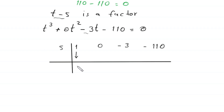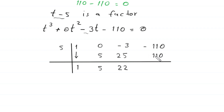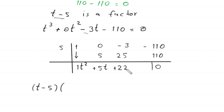The 1 comes down as is. Multiply 1 by 5 to get 5; 5 + 0 = 5. Multiply 5 by 5 to get 25; −3 + 25 = 22. Multiply 22 by 5 to get 110; −110 + 110 = 0. So the factored form is (t − 5)(t² + 5t + 22) = 0.